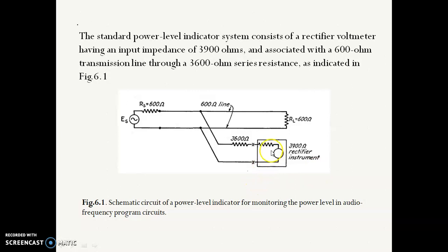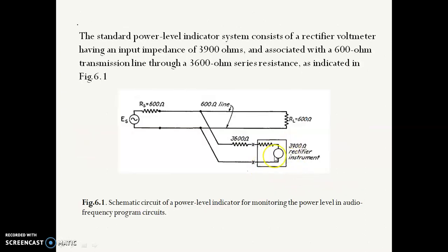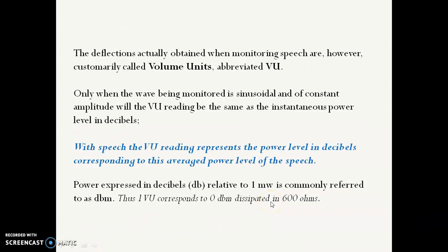So obviously the calibration has been done for this rectifier instrument. It has been calibrated in terms of decibels to measure the power. The instrument accordingly does not read the actual instantaneous power level of speech, but rather indicates a mean level based on an average amplitude over a short period of time. So the scale has been calibrated in terms of decibels for a steady sine wave voltage with one milliwatt flowing in 600 ohms taken as the reference or zero level. So for this we will get a zero dB power.